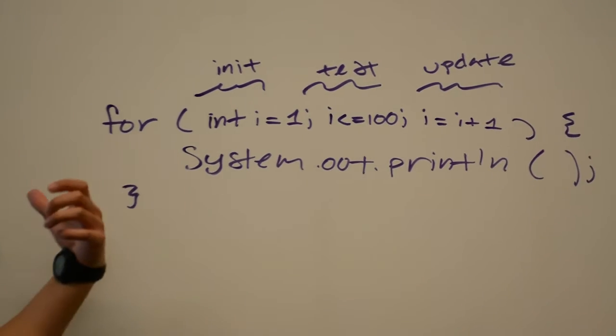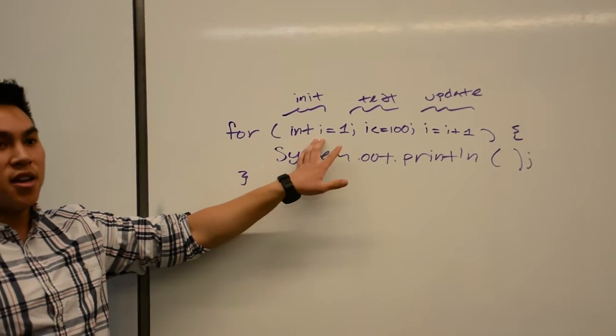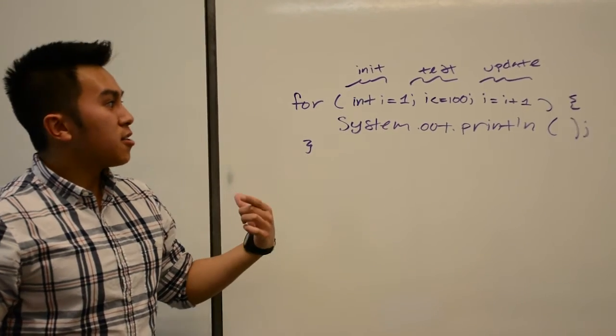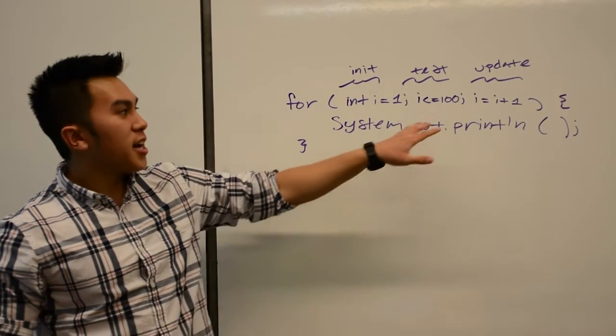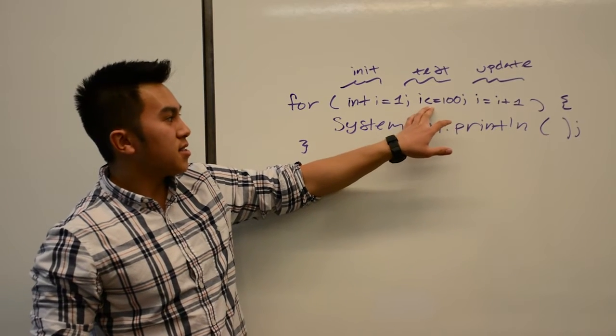So when this for loop first starts running, it'll initialize our int i once, and then for the rest of the iterations, including the first one, we're first going to check to see if this test passes. So we're going to check if i is less than or equal to 100.